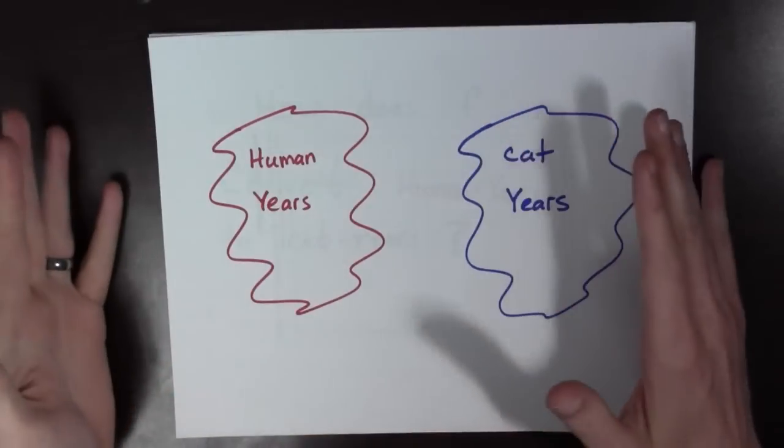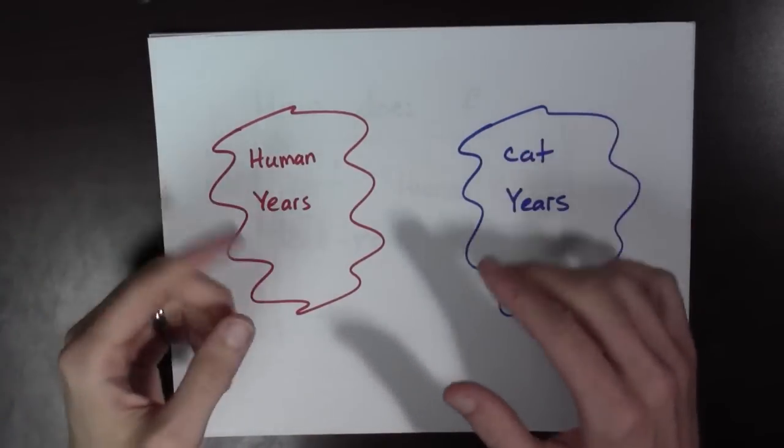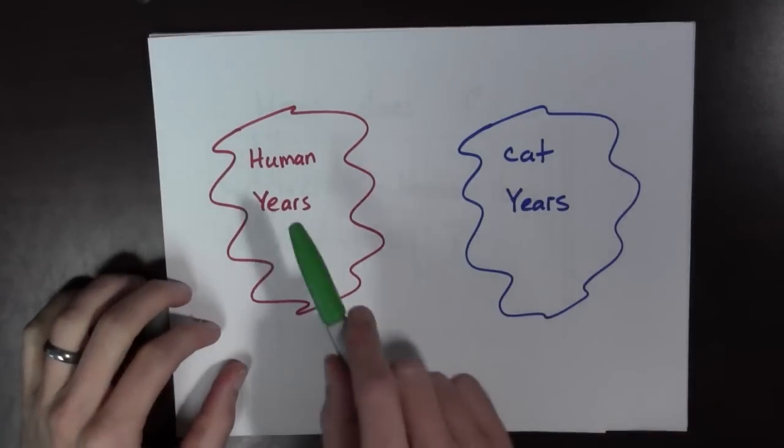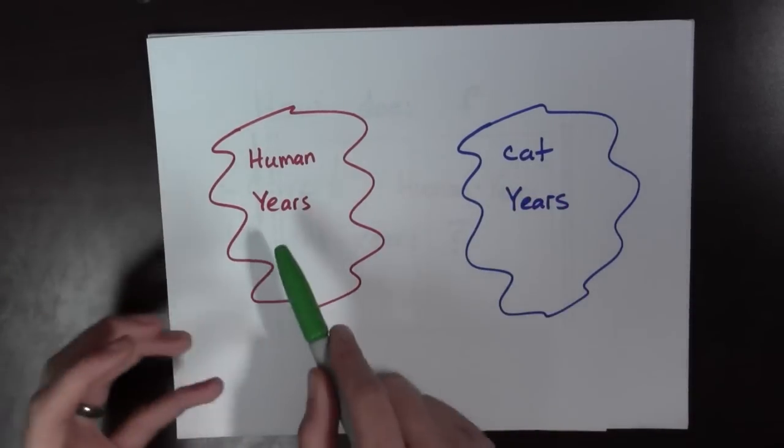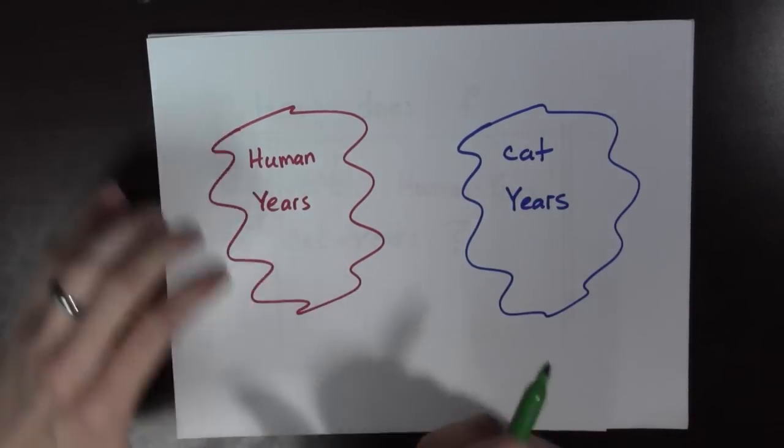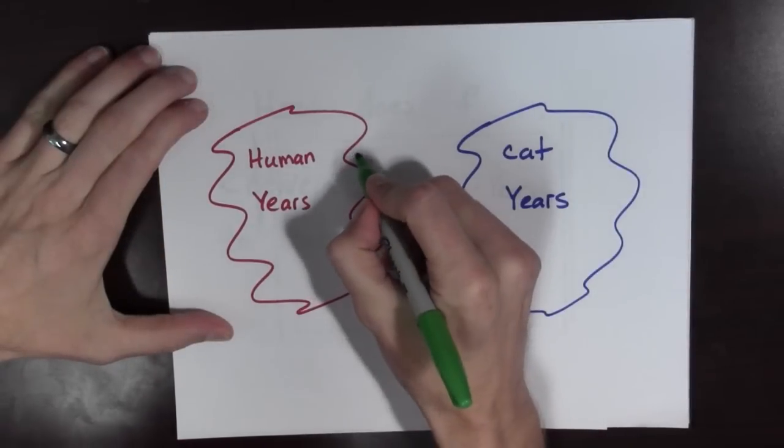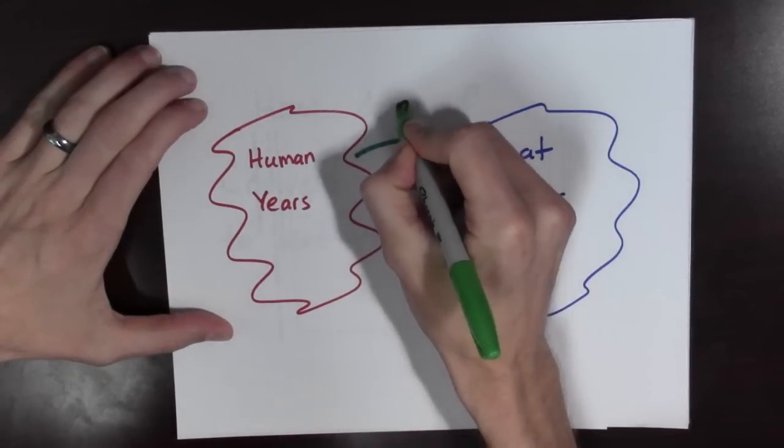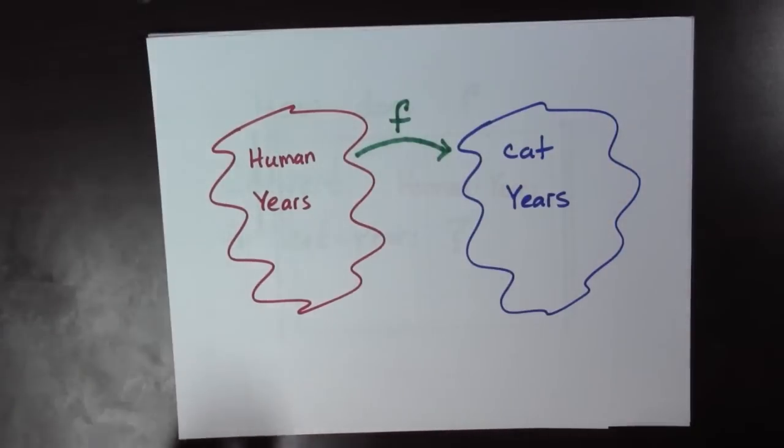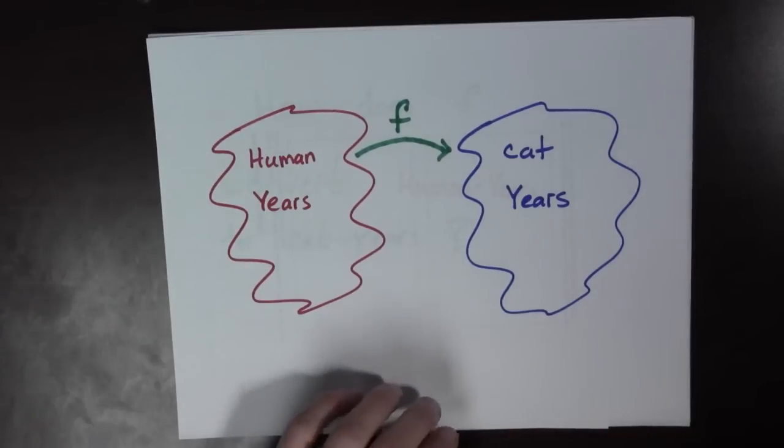So, a function is a relationship between two different quantities. In our case, it's human years and cat years. And what we want, we know how many human years Roxy is old, and we want a map that goes to cat years. And we're going to call this f for function. And it's going to be a function, as we're going to see.